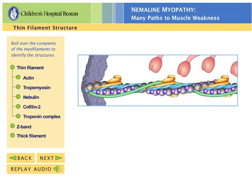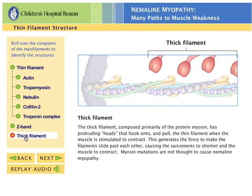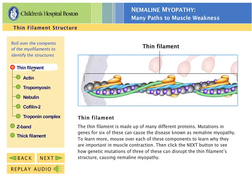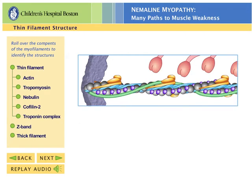Muscle contraction begins when a nerve stimulates the muscle fiber, causing calcium to rush in. This starts a molecular dance between the thick and thin filaments. Use your mouse in the box at left to explore these working parts.